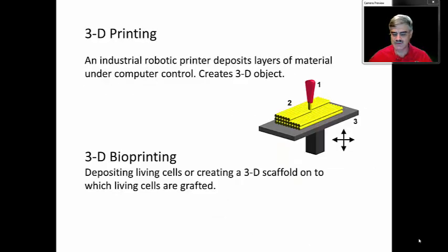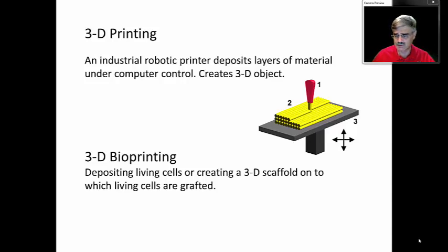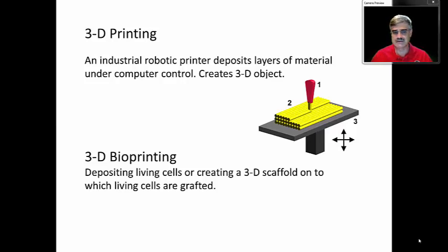The last topic I want to talk about is one that I think is very exciting — it involves 3D printing. 3D printing involves some type of robotic printer which deposits a layer of material under computer control and creates a 3D object. I'll show you a video in a moment to illustrate this. The materials that are deposited have to be special materials that will adhere to and anneal with one another to form the solid object. A particularly exciting version is 3D bioprinting, in which living cells are actually deposited to create tissue.